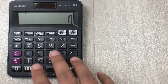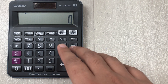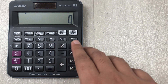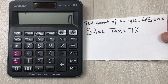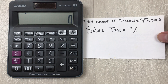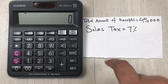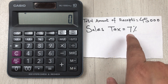Hello guys, in today's video I'm going to show you how to find out gross sales from sales tax on your calculator. For example, the total amount of receipts are $45,000 and the sales tax is seven percent.